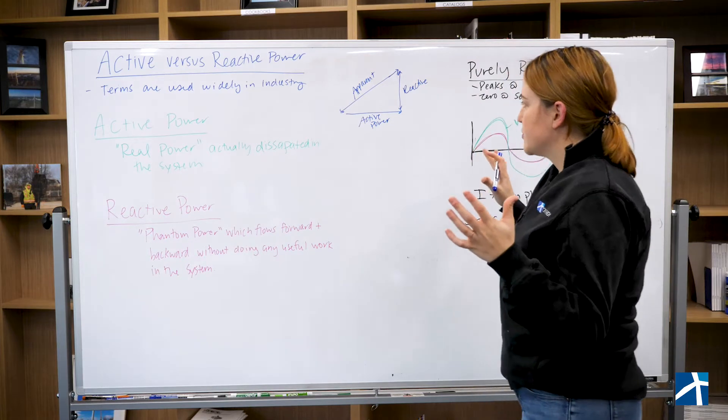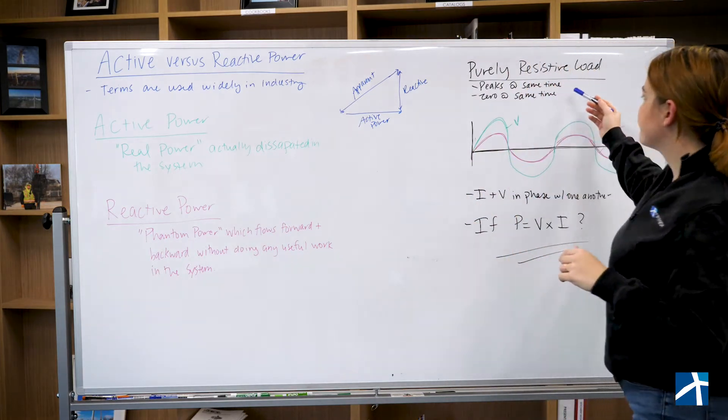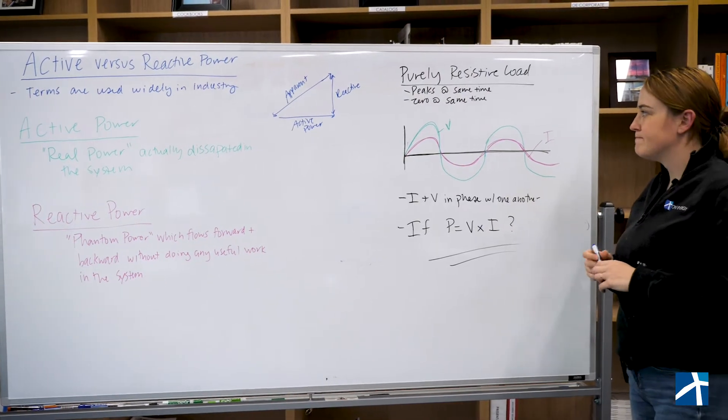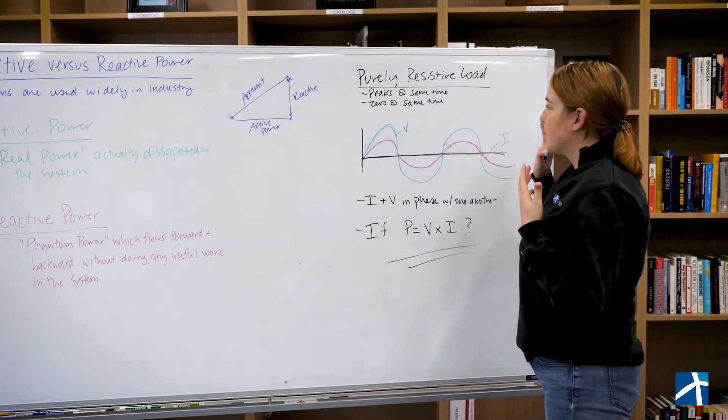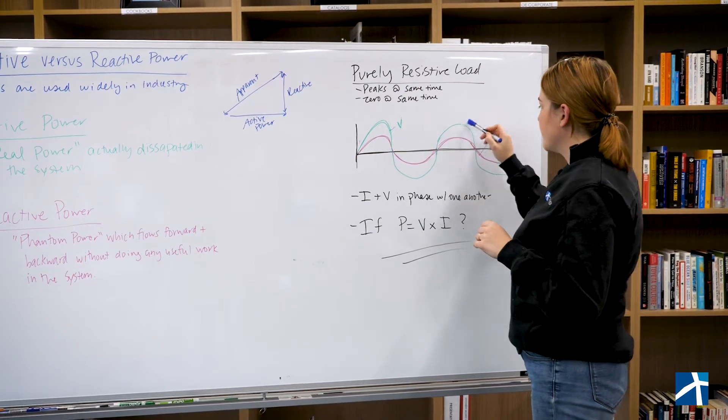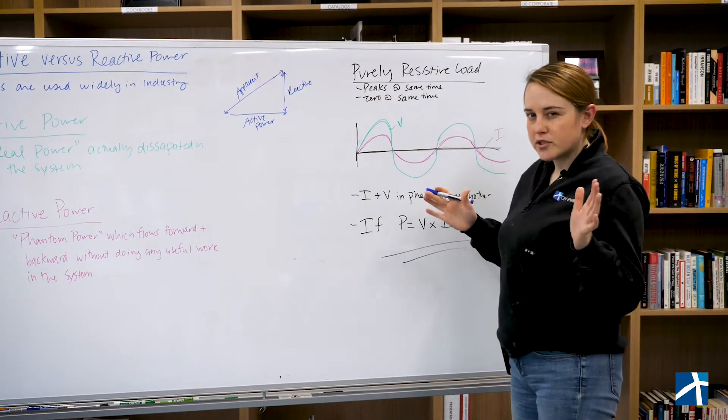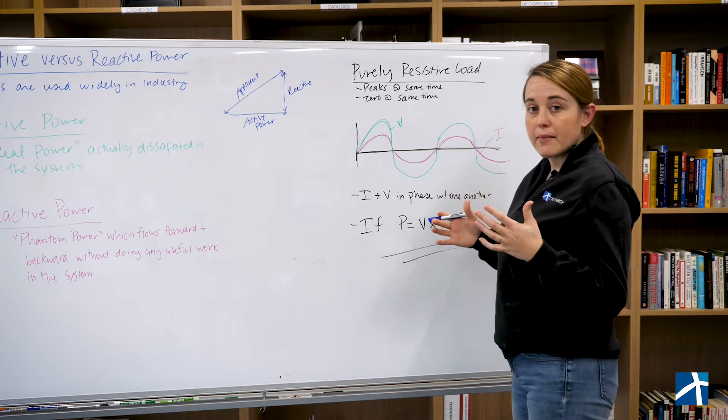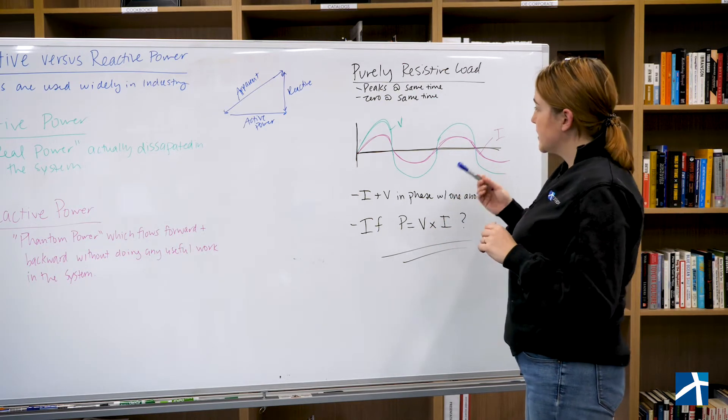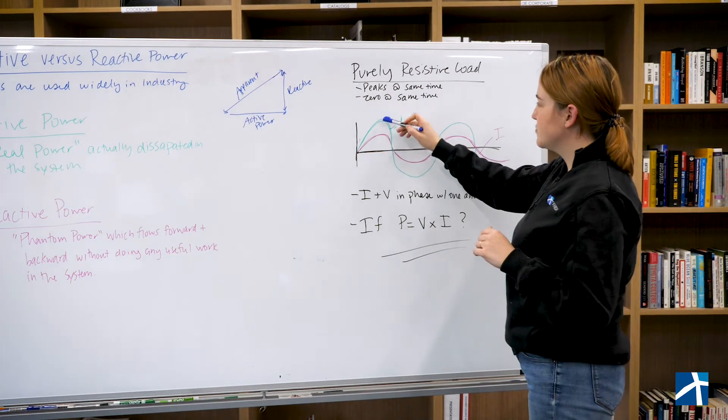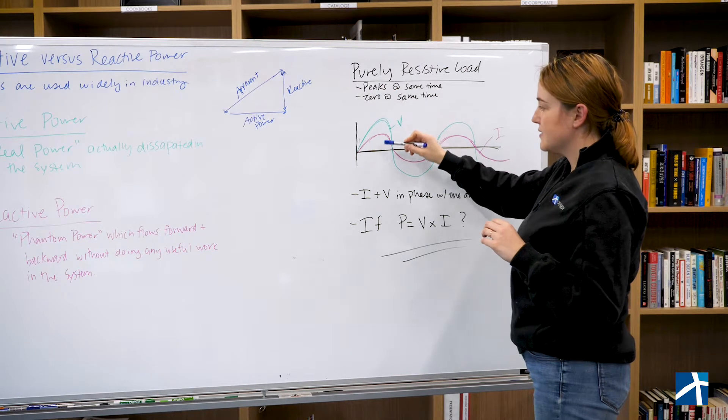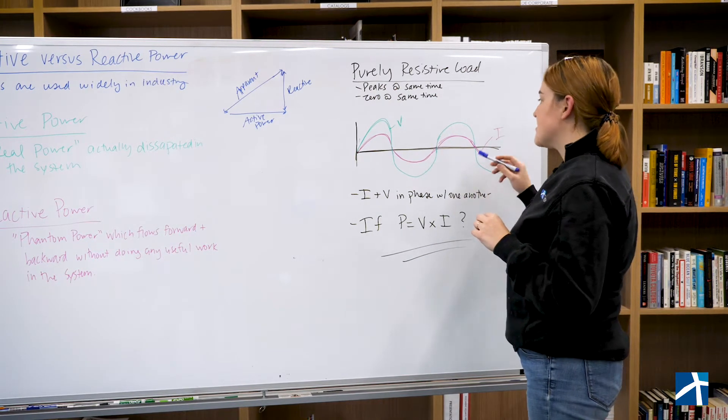So bringing that down to earth a little bit, let's take a look at this purely resistive load. So a purely resistive load, you're going to see that I've put voltage here in green, current in pink. I should have started this video with a disclaimer that my handwriting is abysmal, and my English teachers were never pleased. But as you can see, the peak at the same time, voltage and current peak at the same time, they go to zero at the same time.